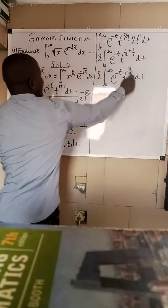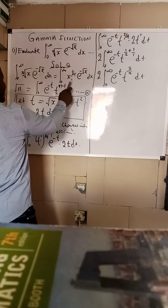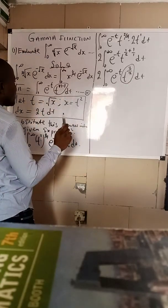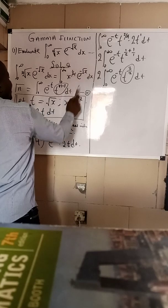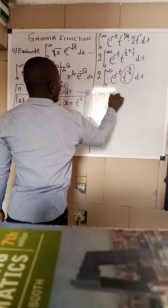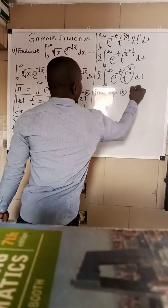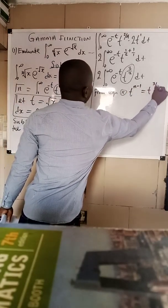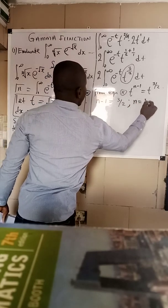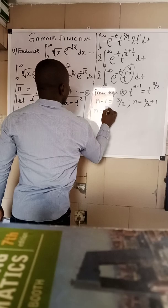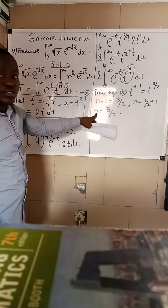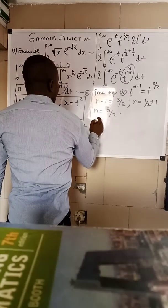To write this in terms of gamma, we fall back to the definition and compare the algebraic parts. From the definition, t raised to the power n minus 1 equals t raised to the power 3 over 2. Comparing their powers, n minus 1 equals 3 over 2, which implies n equals 3 over 2 plus 1, so n equals 5 over 2.